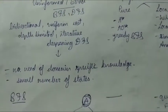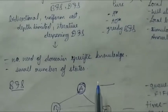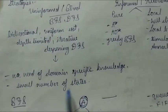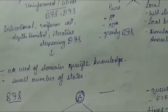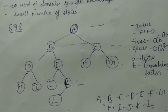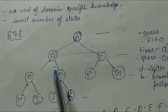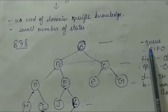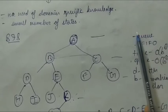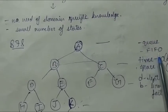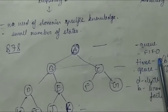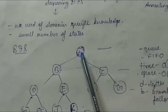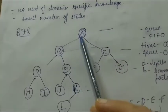In uninformed search, there is no need for domain-specific knowledge, and this strategy applies to a small number of states. The first approach is BFS — breadth first search. BFS is implemented with the help of a queue data structure. The rule followed is FIFO: first in will always be first out.